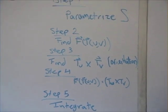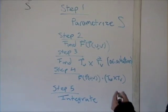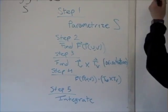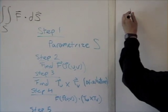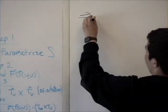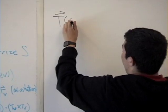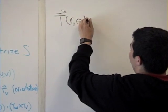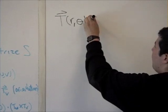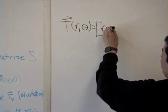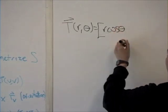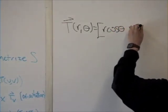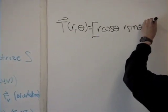So we can start by parameterizing S. We can say that a parameterization is going to be T(r, θ) which is equal to <r cos(θ), r sin(θ), r²>.